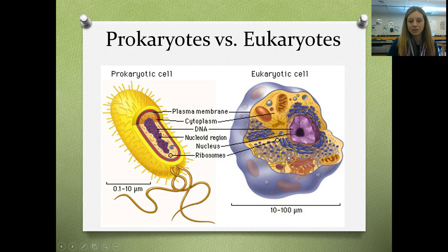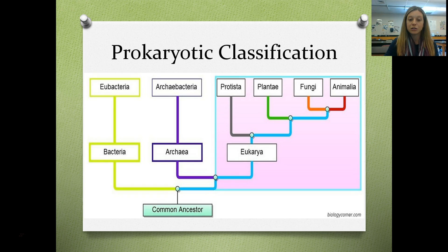Now we'll get into prokaryotic kingdom classification. As a refresher, remember there are three domains — two prokaryotic domains and one eukaryotic domain — and there are six kingdoms. Our two bacteria kingdoms fall under our two bacteria domains.